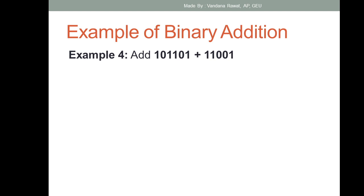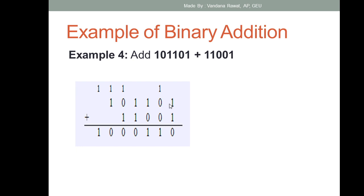One more example to add two binary numbers: 101101 plus 11001. One plus one equals zero, carry one. Then it becomes one, then one plus zero is one, then one plus one is zero with carry one. One plus one is again zero with carry. In the x and y part you only have a carry of one remaining, so the final answer is written directly. These are the rules of binary addition.